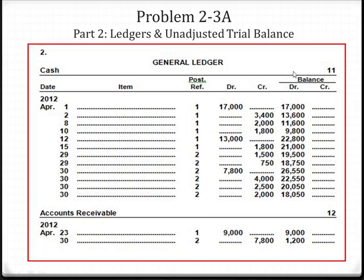To be more specific, accounts receivable had a debit balance of $1,200. All asset accounts have a debit balance, except for contra-asset accounts. Contra-asset accounts contradict an asset and are actually just the opposite. So for accumulated depreciation and other contra-asset accounts, they will actually have a credit balance. We'll learn more about those accounts in Chapter 3.